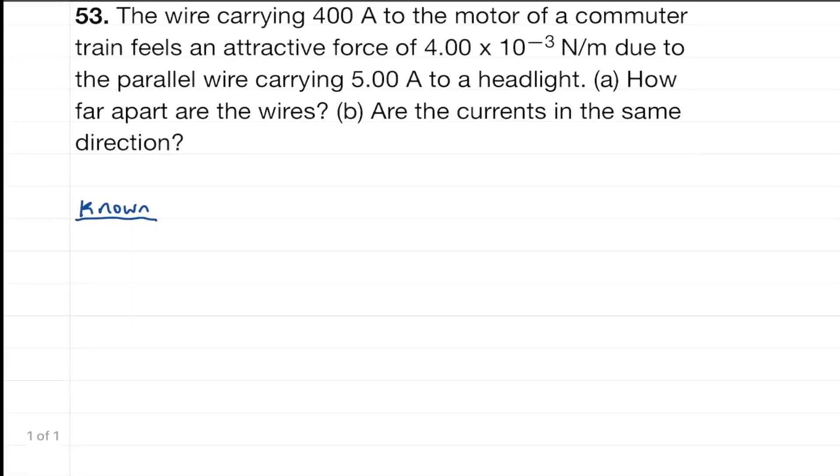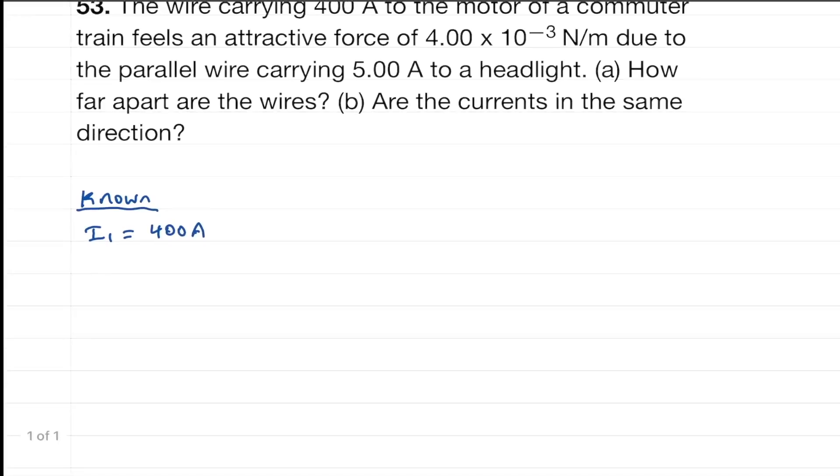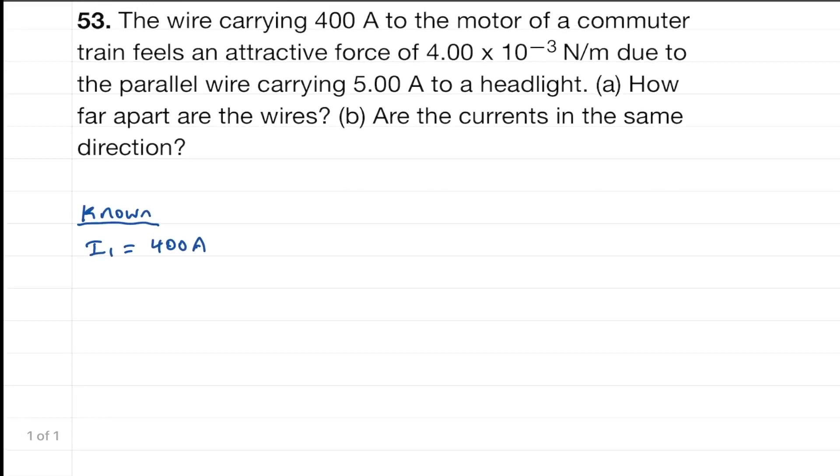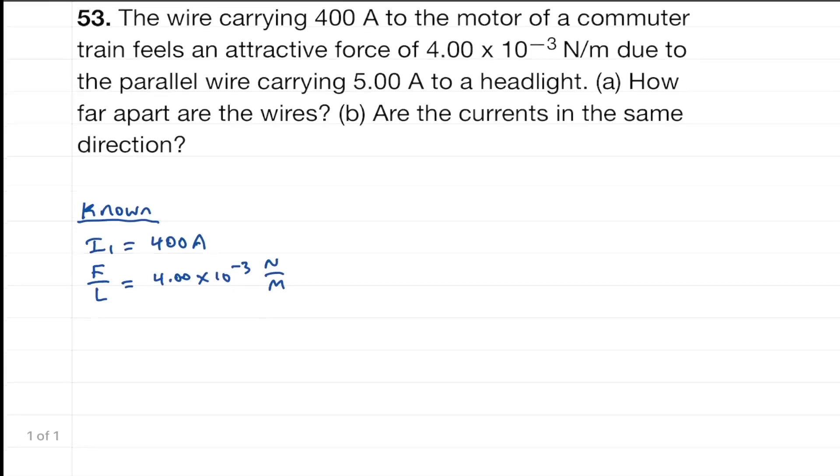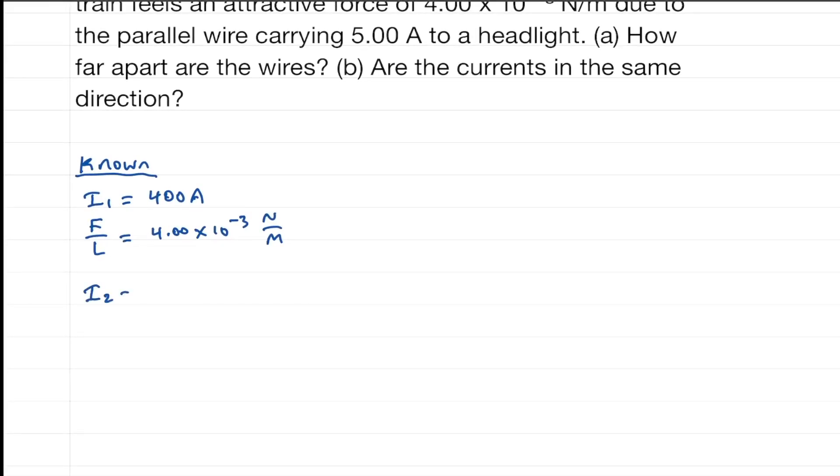Okay, so we can say that current 1 is 400 amps. We have a force per length of 4.00 times 10 to the minus 3 newtons per meter. And we have a second current of 5 amps.